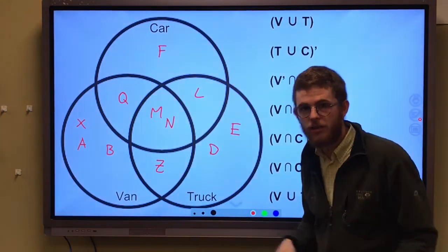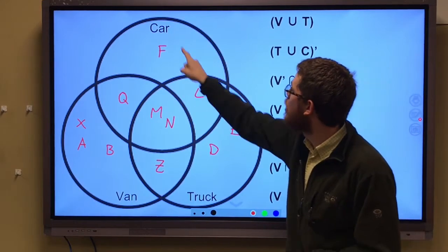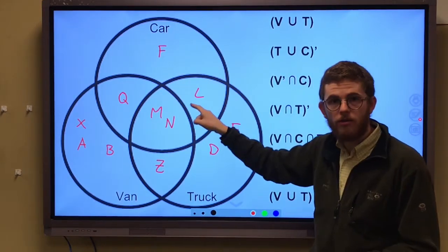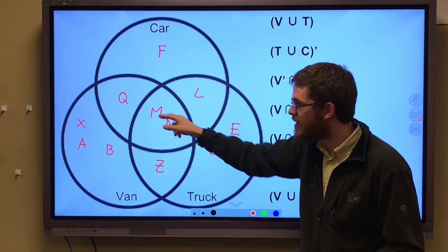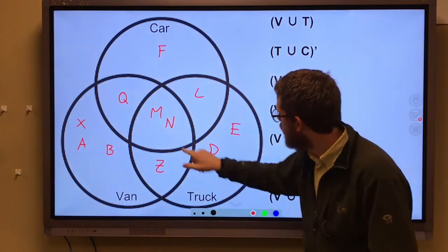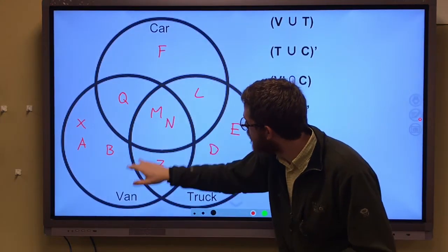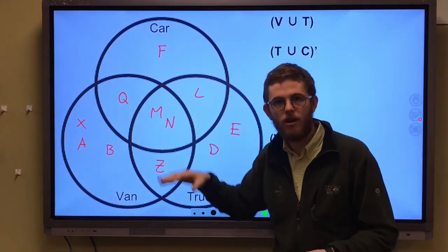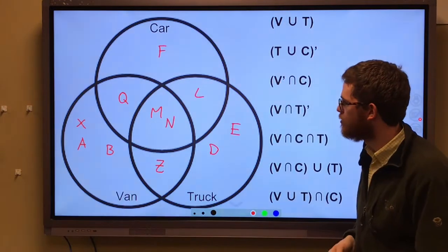But L, let's say Leticia, in her driveway there's a car and a truck. She has both. M and N, for Monique and Naomi, in their driveway is a van, a car, and a truck. So that's kind of the situation here.